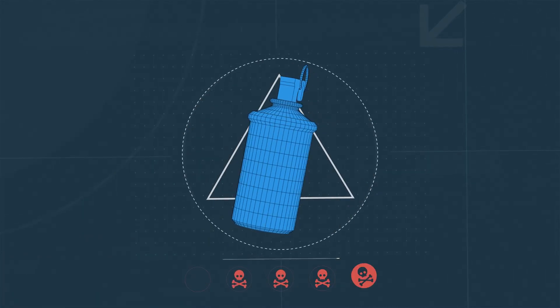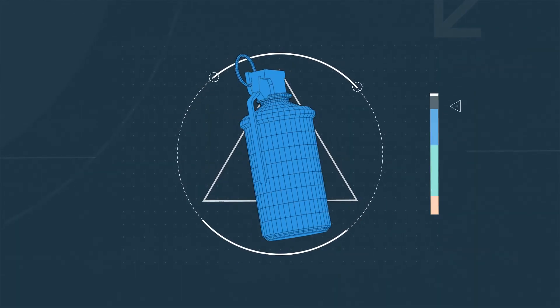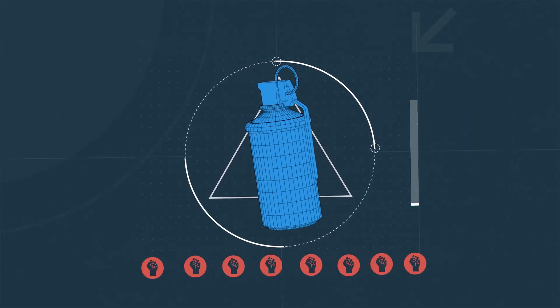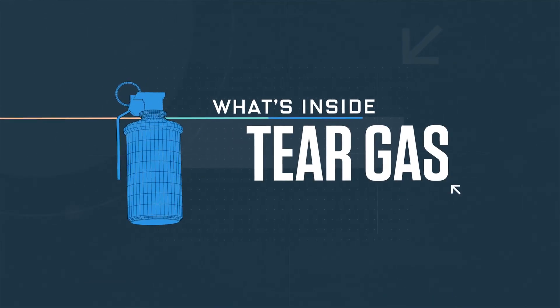In World War One, toxic gas was a weapon of choice. Today, law enforcement uses a less potent recipe to pacify a room or control a crowd. But what's inside a can of tear gas?